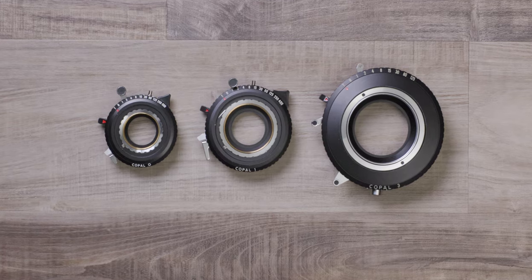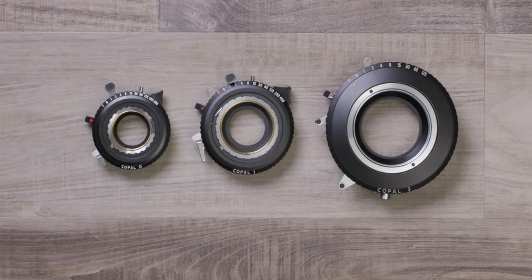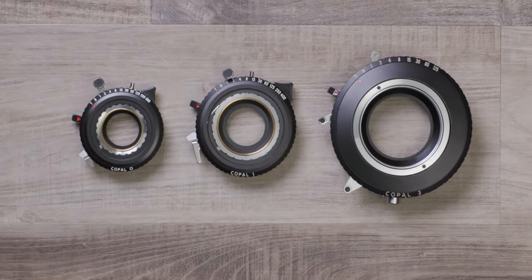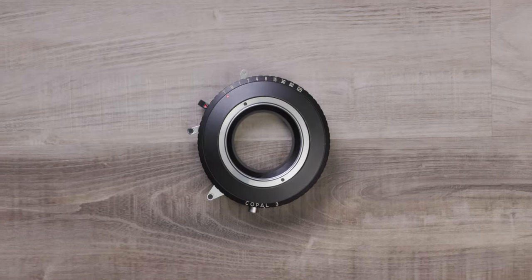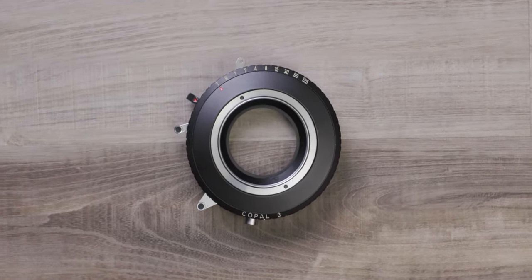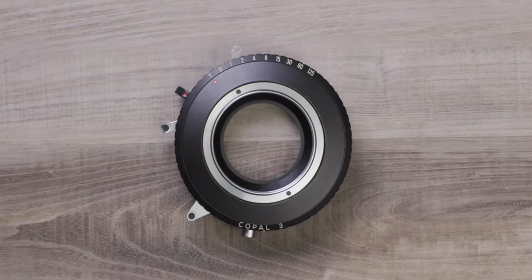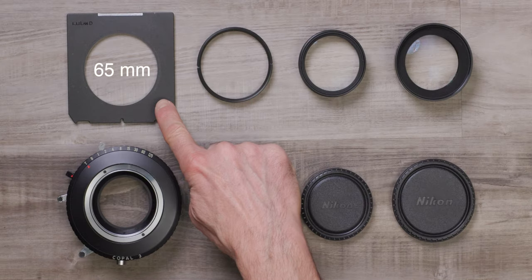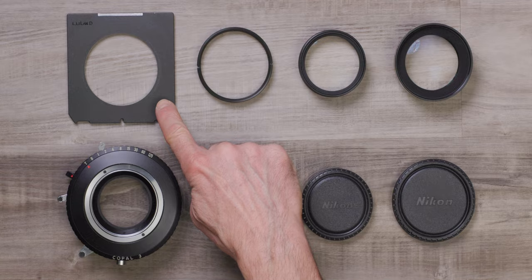There are several different manufacturer shutters but the most commonly used are made by Copal. They are available in three sizes and the focal length determines which shutter size is appropriate for the lens. In this case the Nikon Nikkor 450 millimeter M lens is coupled with a Copal number three shutter which needs a 65 millimeter hole to properly secure the lens to the lens board.